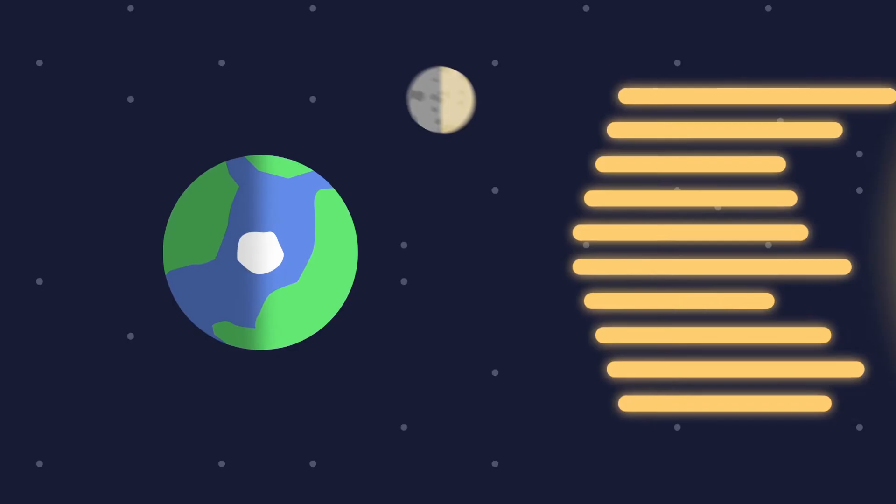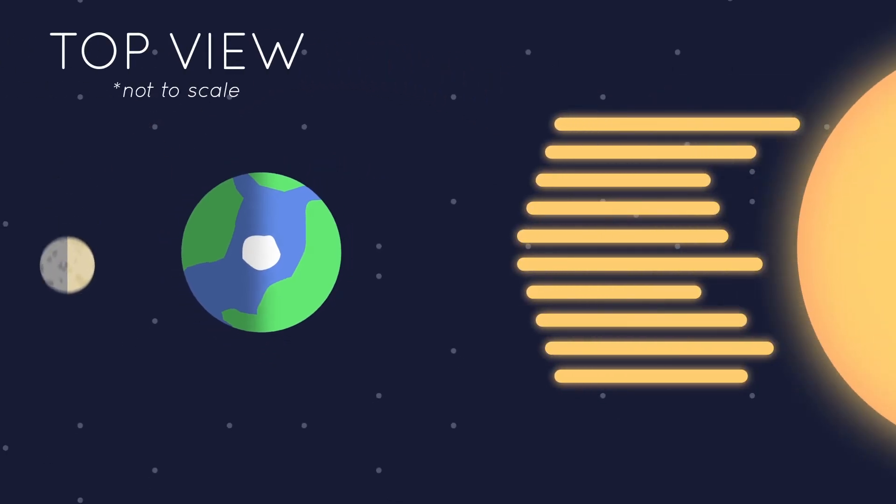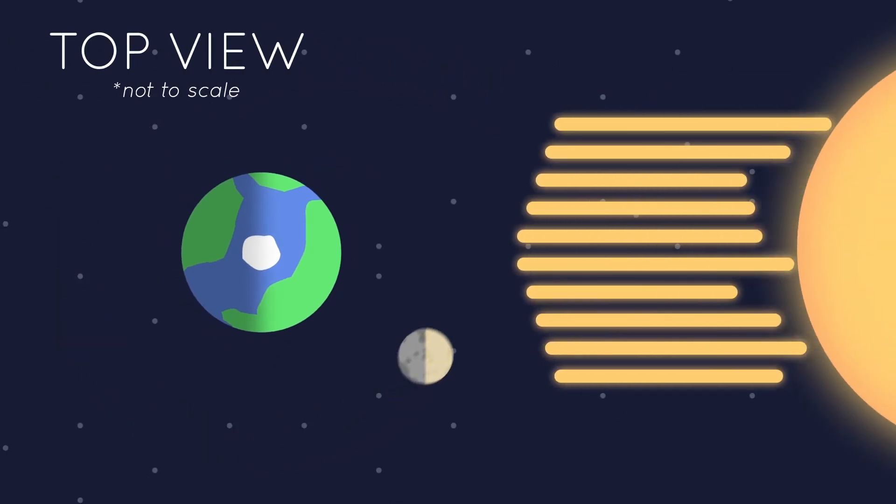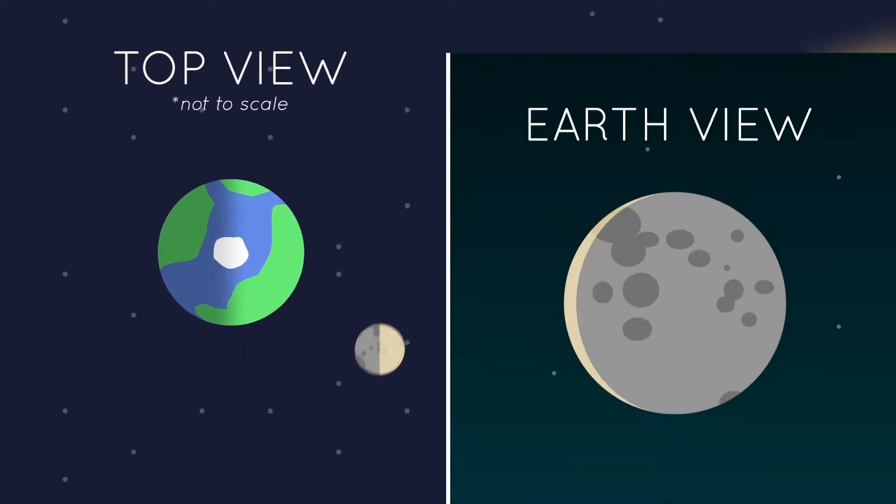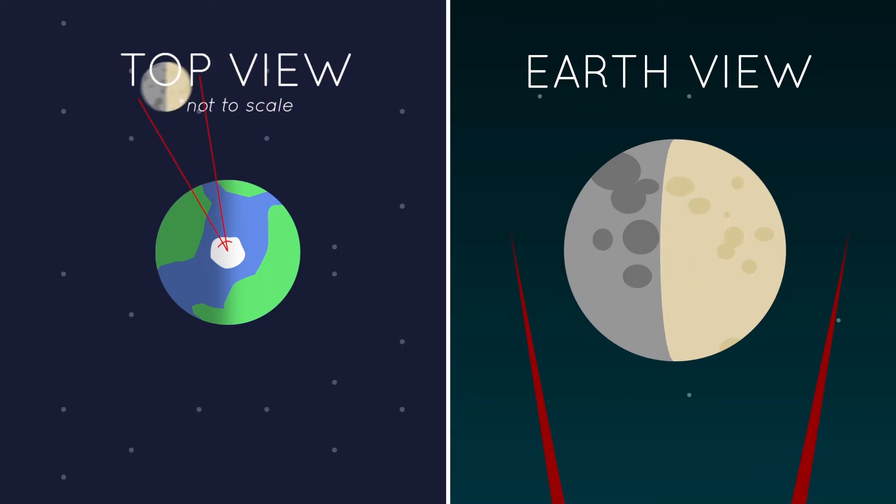If we were to leave Earth, we'd see that the moon is almost always being bathed in sunlight, with one half of it in light and the other half in darkness, just like Earth. So why does it look different throughout the month? Glad you asked. It all has to do with perspective.